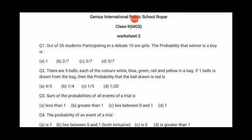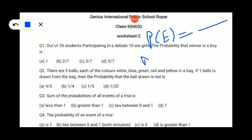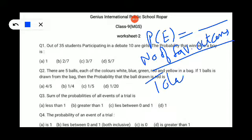Welcome back everyone. Today we will be discussing the solution of this worksheet, which is from Chapter 15 on probability. We will focus on only one formula: probability of any event equals number of favorable cases or outcomes divided by total number of outcomes or cases.